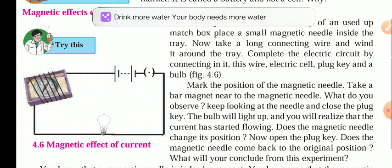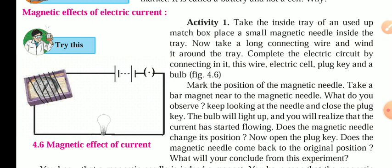Oersted performed a lot of experiments in this particular field and gave the concept that if there is a flow of electrical current in a conducting wire, then it produces a magnetic field around it.